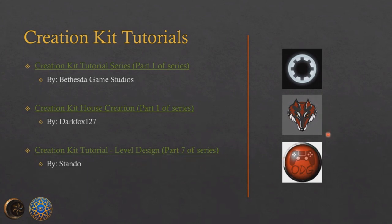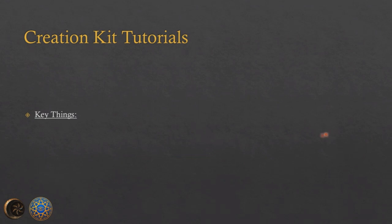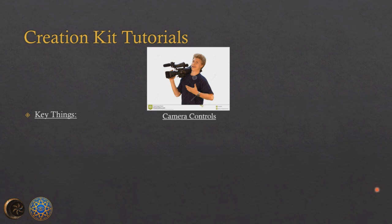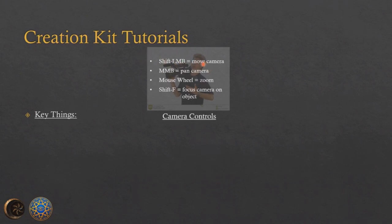Key things to remember for level design in the Creation Kit — first, camera controls. Your render window is what you'll be looking at the entire time, dragging things in and moving them around. You can't do that without controlling the camera. Any 3D people will know you can't run 3D software without camera control. Shift + Left Mouse Button moves the camera, Middle Mouse Button pans it, Mouse Wheel zooms.